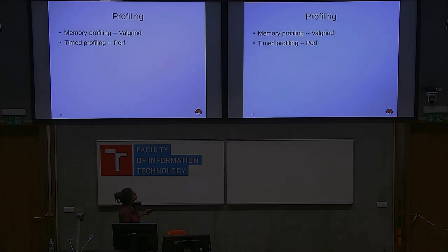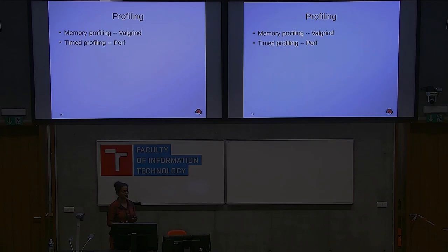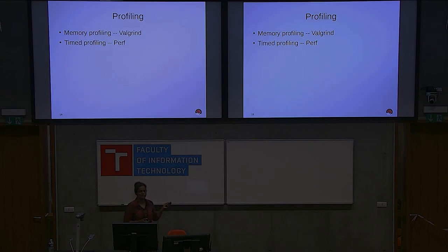Then comes the profiling part. For memory profiling you can use Valgrind. For time-based profiling — how the program performs in terms of time — you can use Perf. For memory performance, the most useful Valgrind tool is Cachegrind, which shows how many cache misses and cache hits are happening and helps you figure out what you can do to improve.